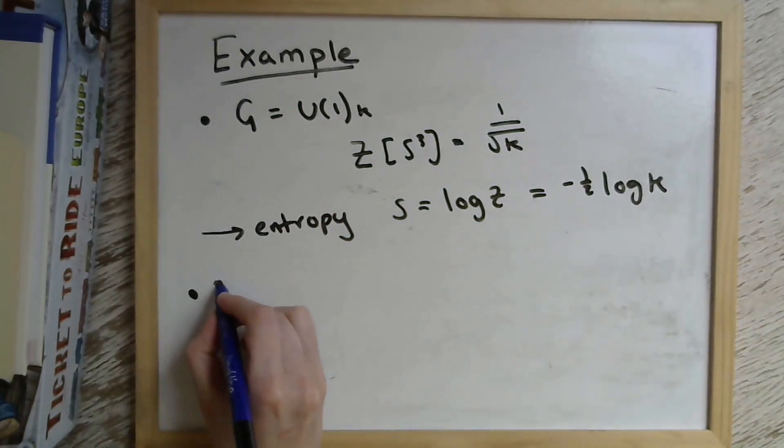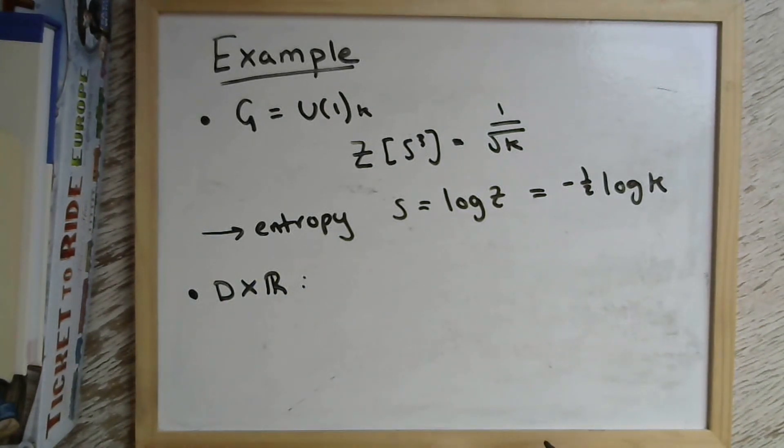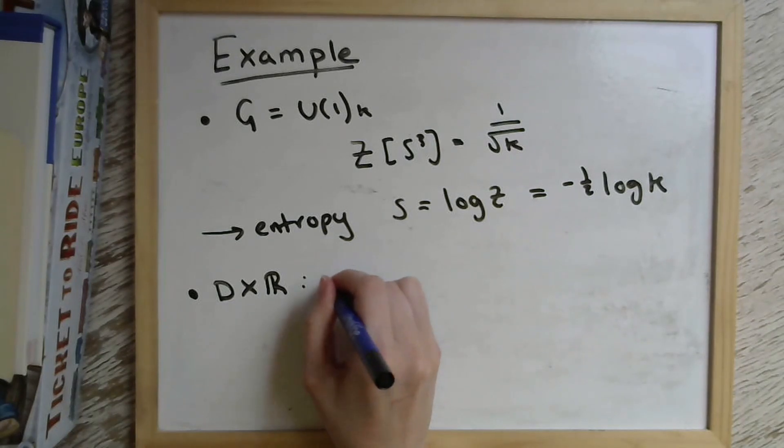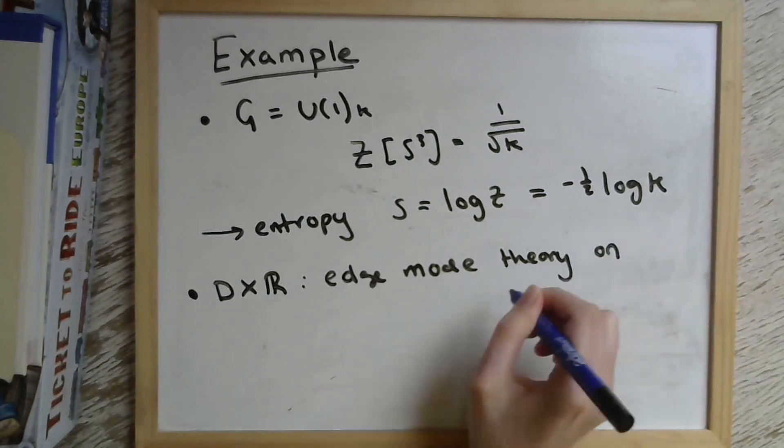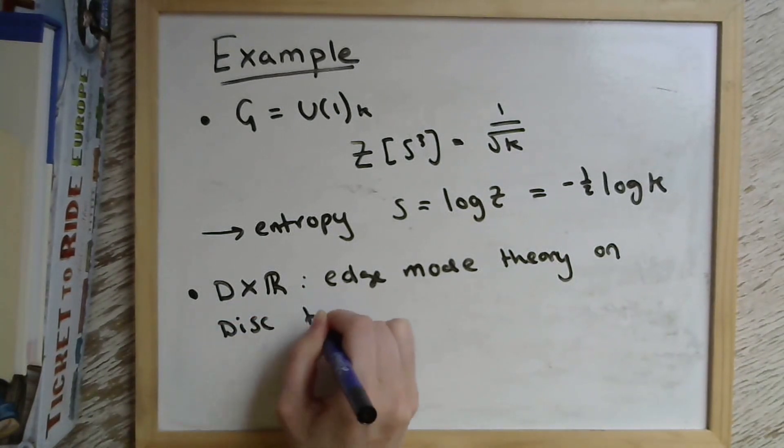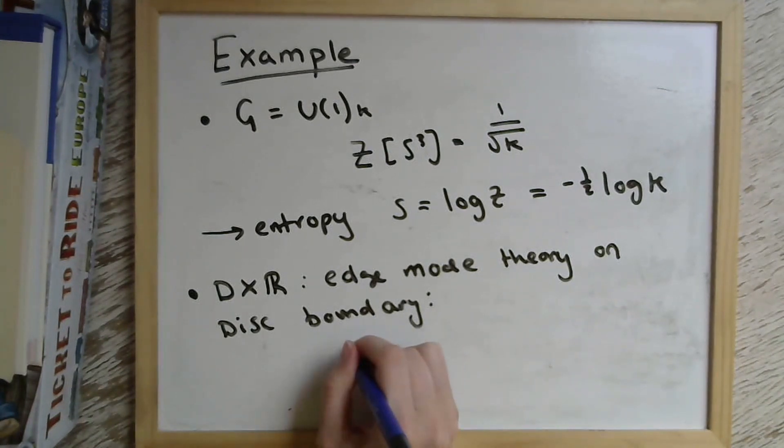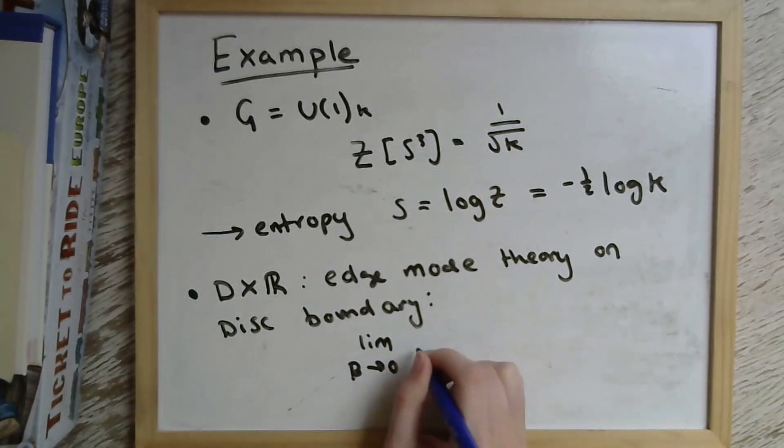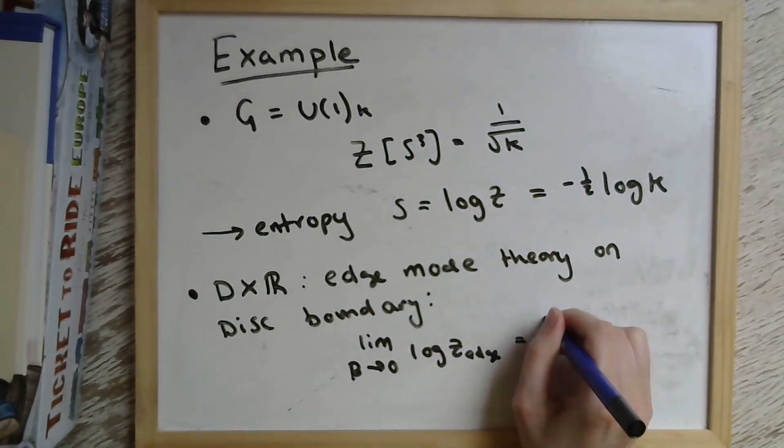And we can do the same thing on the disk times the real line to do the static patch calculation. In the case where Chern-Simons theory is put on a manifold with a boundary, we get an edge mode theory induced on that boundary. And in this case, it's the theory of a compact chiral boson, chiral in the sense that it's only travelling in one direction around this disk boundary.